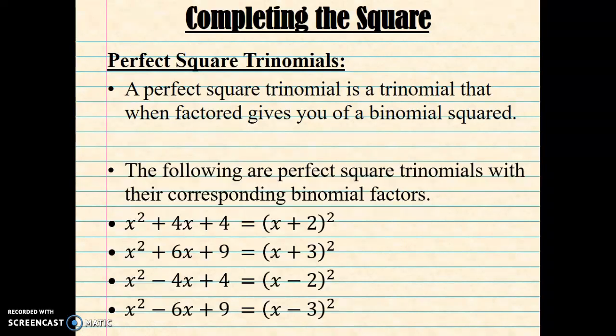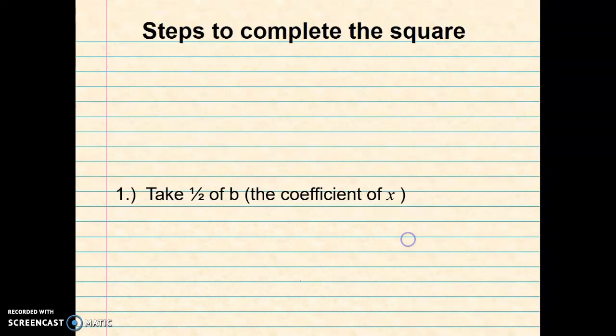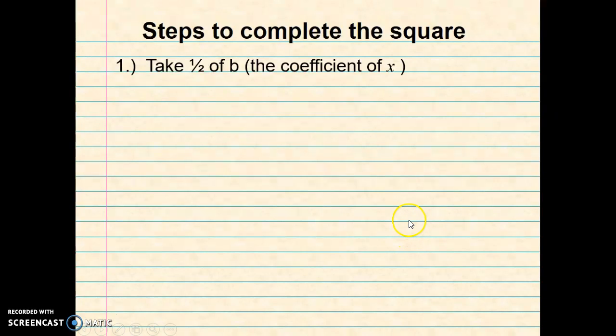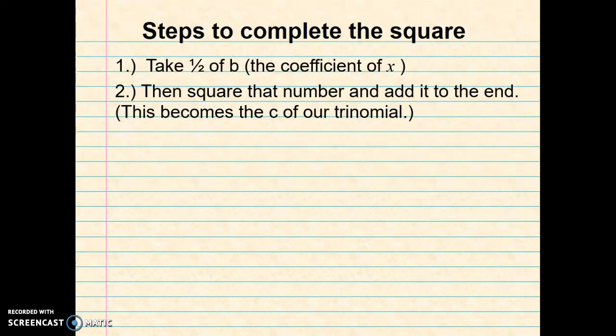Okay, so let's look at the steps. Step one is to take half of B, which you already know is the coefficient of the x term. Step two is to square that number and then add it to the end. This becomes the C of our new perfect square trinomial.